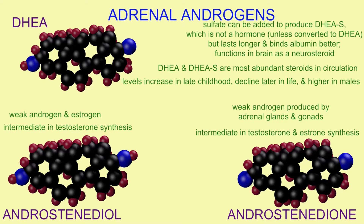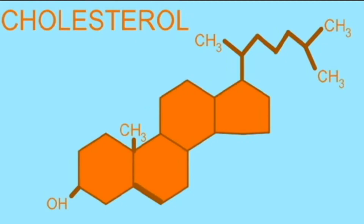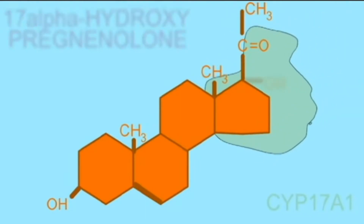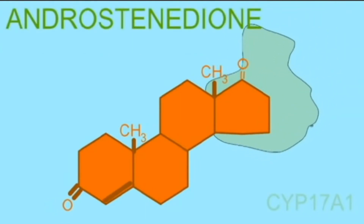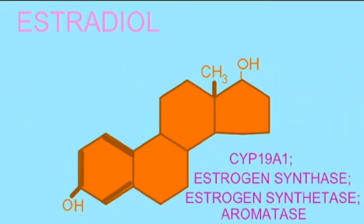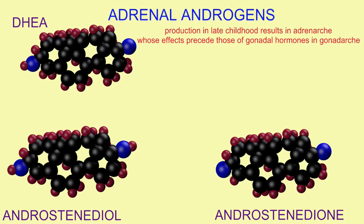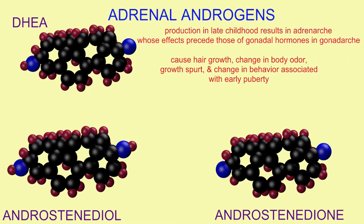Androstenedione is an intermediate in both testosterone and estrone synthesis, and in older women this adrenal androgen is more important given that the ovaries' production of androstenedione decreases after menopause. The adrenal androgens DHEA, androstenedione, and androstenedione are produced in late childhood, causing adrenarche — the hormonal changes of early puberty which precede the changes caused by the gonadal hormones.